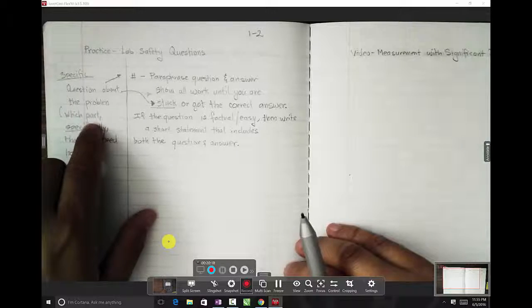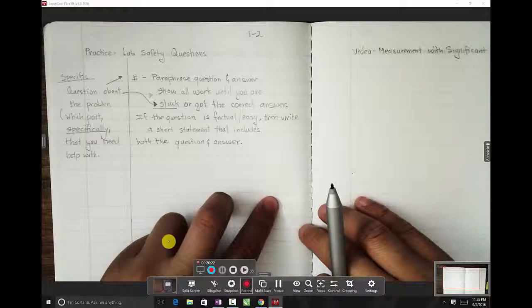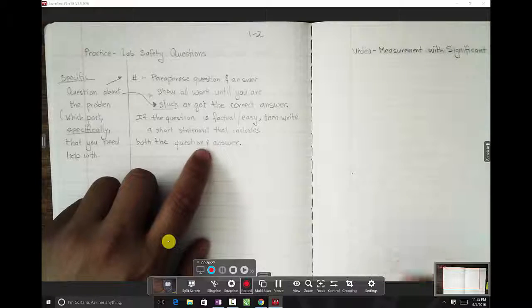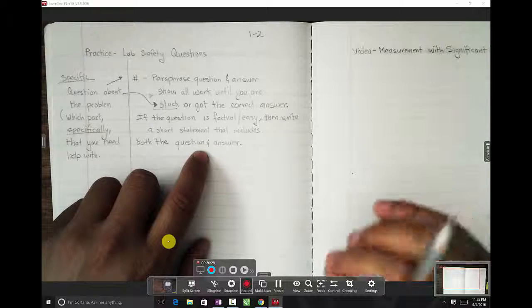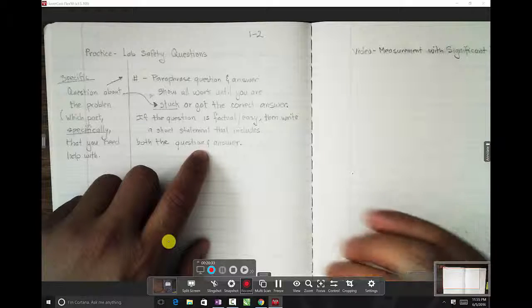Now, on the contrary, what if you have a question that is extremely easy? What you have to do is just paraphrase the question and the answer in a very brief statement to show me that you have tried and you have not attempted copying this answer from somebody else.